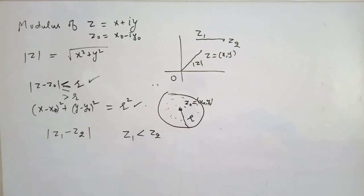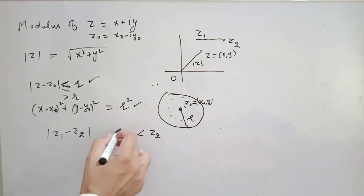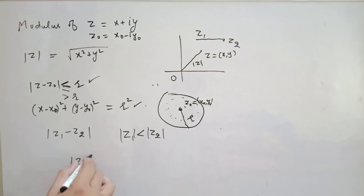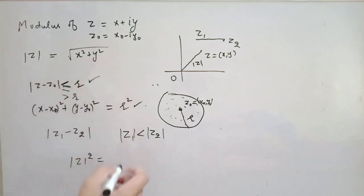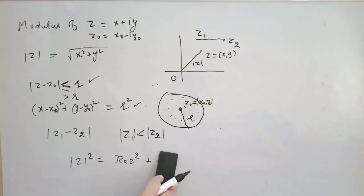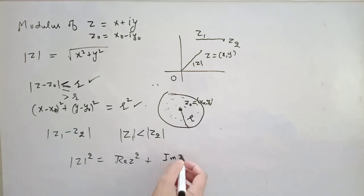Can we compare two complex numbers? No, but we can compare their moduli, because those are real numbers. So the order relation exists between real numbers, not complex numbers. For example, |z₁| < |z₂| means z₁ is nearer to the origin than z₂. Also note that |z|² = x² + y² = (Re z)² + (Im z)².